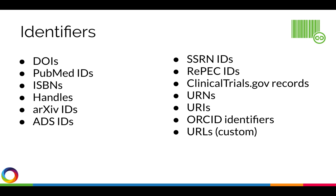In order for a tweet or other form of online attention to be tracked, it must include a working link to a page with the article's identifier. For journal articles, this is usually the DOI, but could also be a PubMed ID, Archive ID, SSRN ID, or any one of the numerous unique identifiers Altmetric tracks.